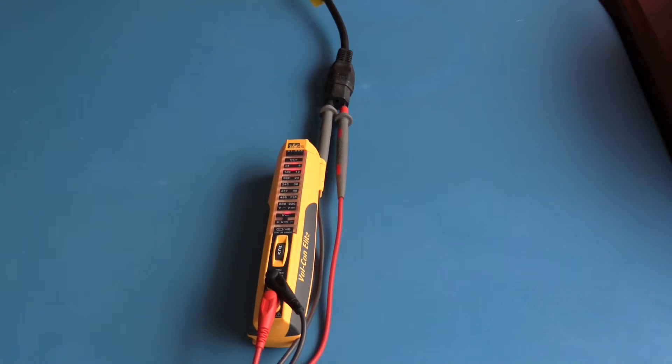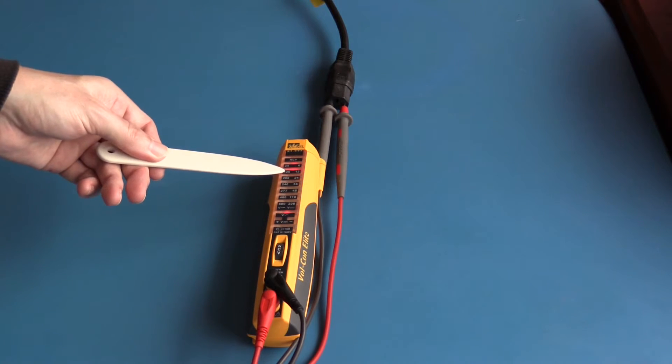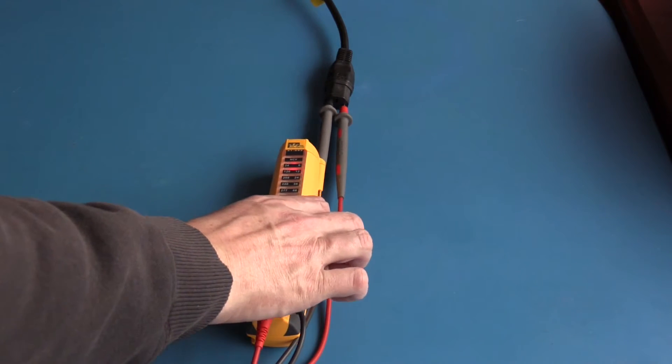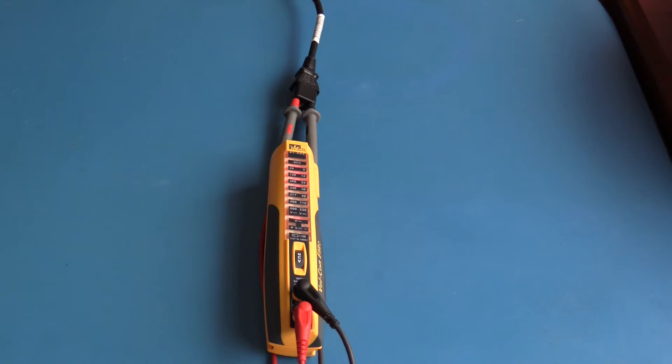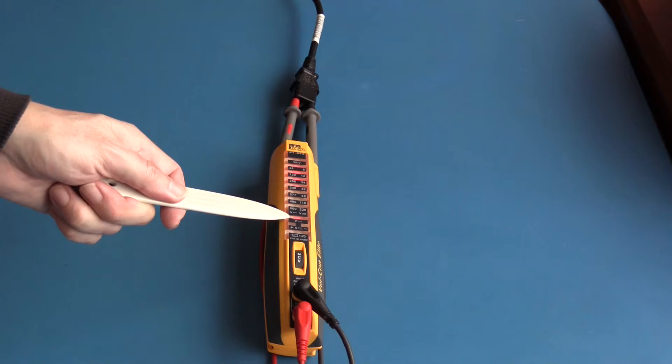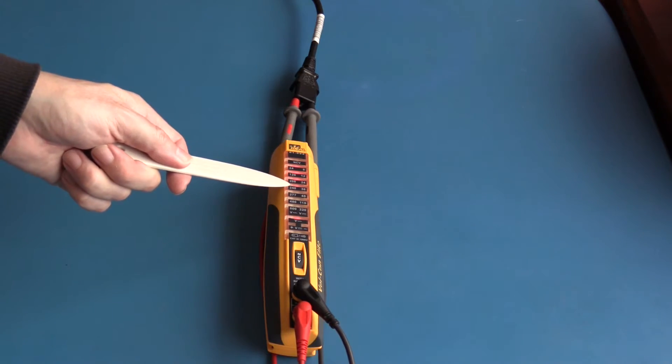I have now connected a set of test leads. I'm using the probes and we can see that it is indicating 120 volts. The unit is also vibrating. I'm performing the same test with the original power cord, AC voltage and 240 odd volts.